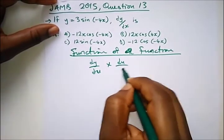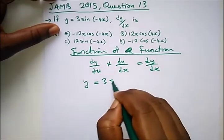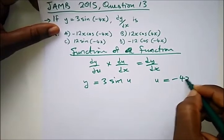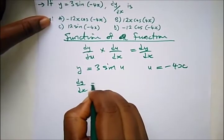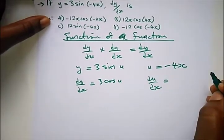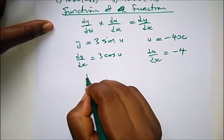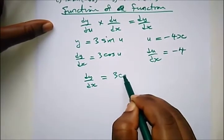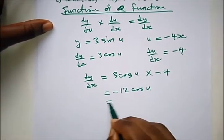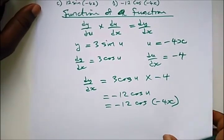Using the chain rule formula: dy/dx = (dy/du) × (du/dx). Let u = 3 − 4x, so y = 3 sin(u). Then dy/du = 3 cos(u), and du/dx = −4 using the direct rule. Multiplying: dy/dx = 3 cos(u) × (−4) = −12 cos(u). Substituting back, u = 3 − 4x, so dy/dx = −12 cos(3 − 4x). The correct option is the answer shown.